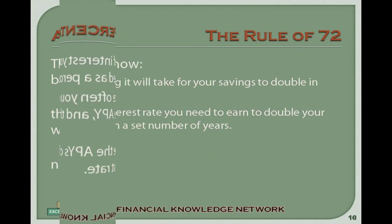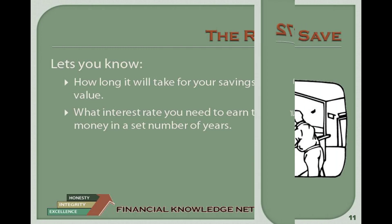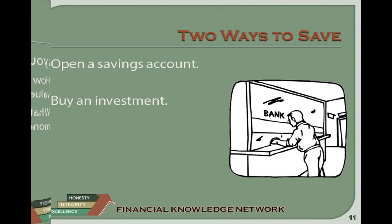Another key measurement is the Rule of 72 — the amount of time it will take your investment to double in value. You will find calculators on the website to help you make these calculations, and you can also figure out what interest rate you need to double your money in a set number of years. There are generally two types of accounts you can create for investment: you can open a savings account, or you can buy an investment.